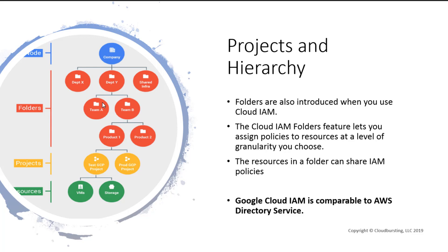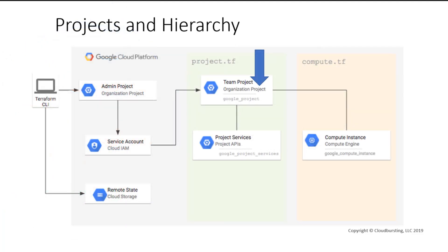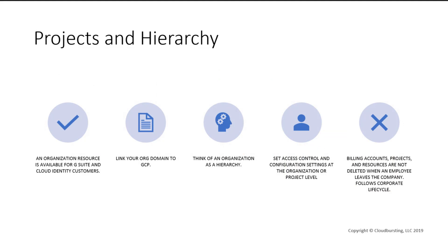Here's an example of a project and how we would tie in services as part of that project. A resource in Google Cloud can be any of the Google Cloud services being used — anything under a project, any APIs, et cetera. If we're already using G Suite and have a top-level domain with Google Cloud, we can simply tie in those resources to our cloud environment as well. It's all part of the hierarchy.